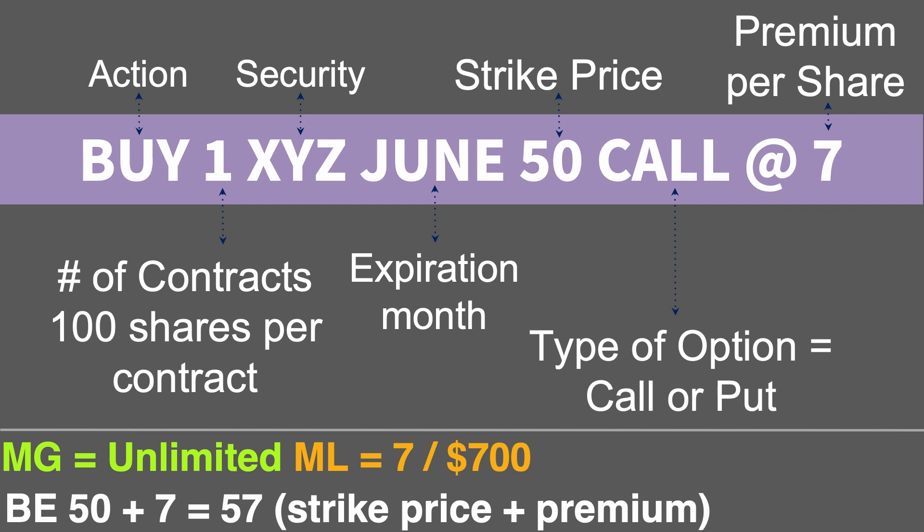Let's look at max gain, max loss, and break even. When you buy a stock there's no limit to how high that stock price can go — it could go to infinity. So your maximum gain is unlimited. When you buy a call it gives you the right to buy a stock at a set price, and again there's no limit to how high it can go, so your maximum gain remains unlimited. When you buy an option your maximum loss is always the premium you paid — here $700. We can't lose any more than $700.